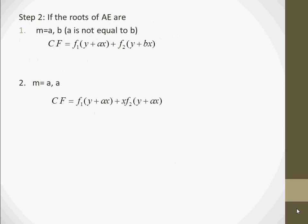Step 2: We find the roots of the auxiliary equation. If the roots are real and distinct — for example, m equal to a and b — then the complementary function will be f1(y + ax) + f2(y + bx).